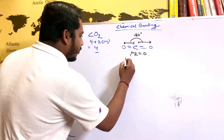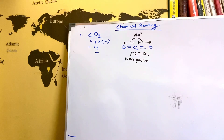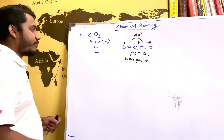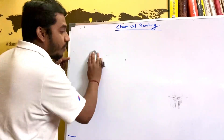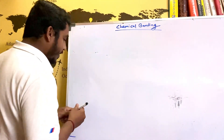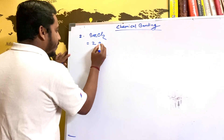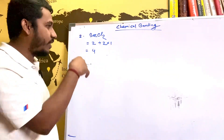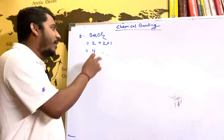Because the dipole moment is zero, we call CO2 a nonpolar molecule. Now let's go to the next example. We will look at BeCl2. For BeCl2, the valence electrons of Be is 2, plus chlorine 2 into 1, which gives 4, so BeCl2 has a steric number of 4.